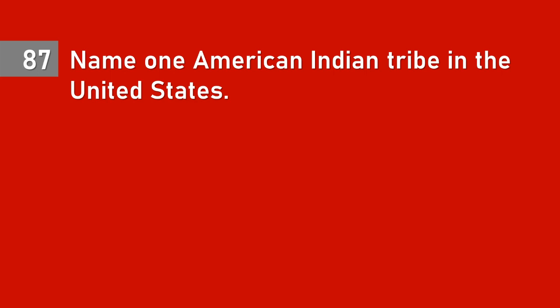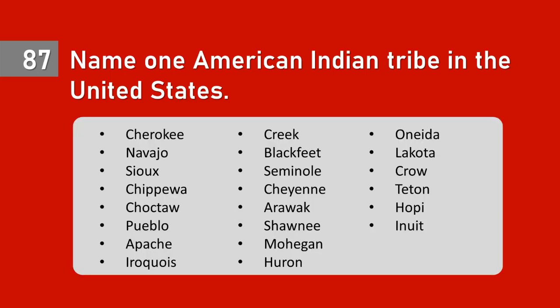Question 87: Name one American Indian tribe in the United States. Cherokee, Navajo, Sioux, Chippewa, Choctaw, Pueblo, Apache, Iroquois, Creek, Blackfeet, Seminole, Cheyenne, Arawak, Shawnee, Mohegan, Huron, Oneida, Lakota, Crow, Teton, Hopi, Inuit.